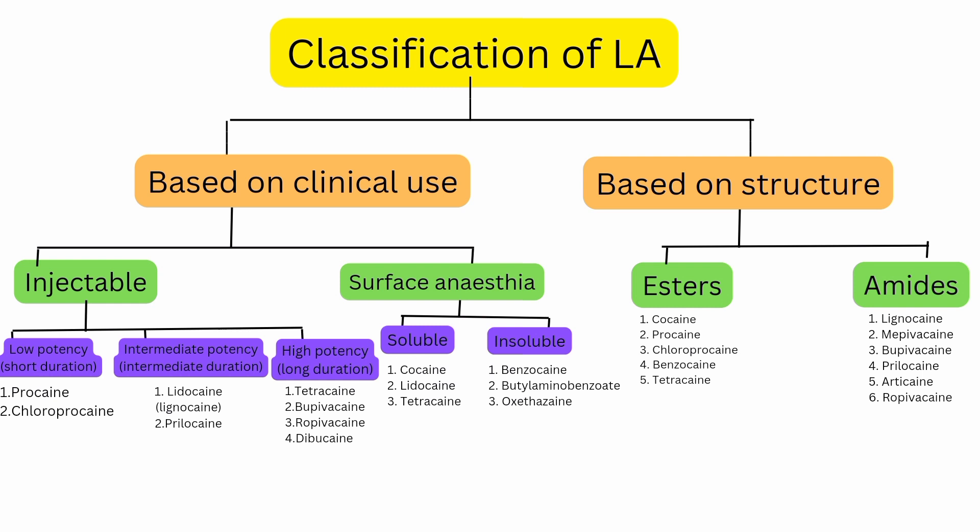Our next medicines are intermediate potency, which also have an intermediate duration of action. We have two drugs: Lidocaine and Prilocaine. Lidocaine is also known as Lignocaine. The prototype drug for esters is Procaine, and for amides the prototype is Lignocaine. Lignocaine is a very popular anesthesia.